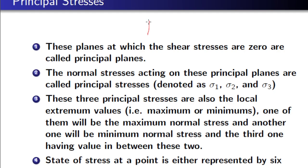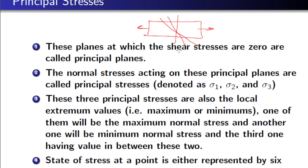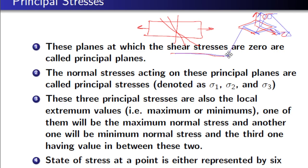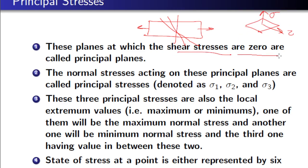As discussed in the case of uniaxial loading, if you take the area perpendicular you have one value of stress, and for different inclined areas you get different values. This stress keeps varying depending on the inclination of the area you consider. When you keep rotating, you will find some planes where the shear stresses are zero. In general, on any cross-section there can be a normal stress sigma and a shear stress tau. Those planes where the shear stresses are zero are called principal planes.